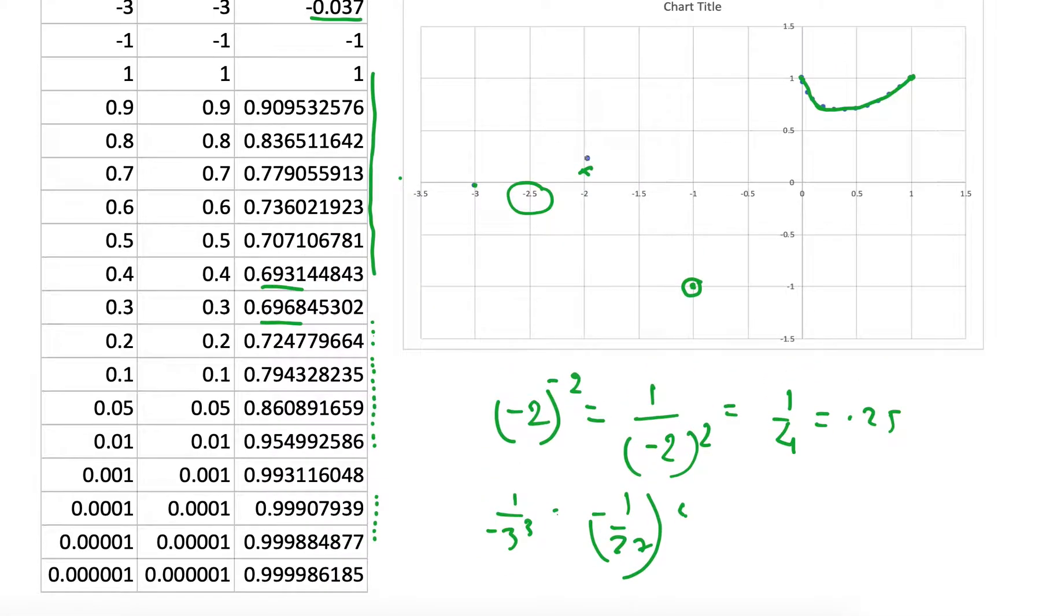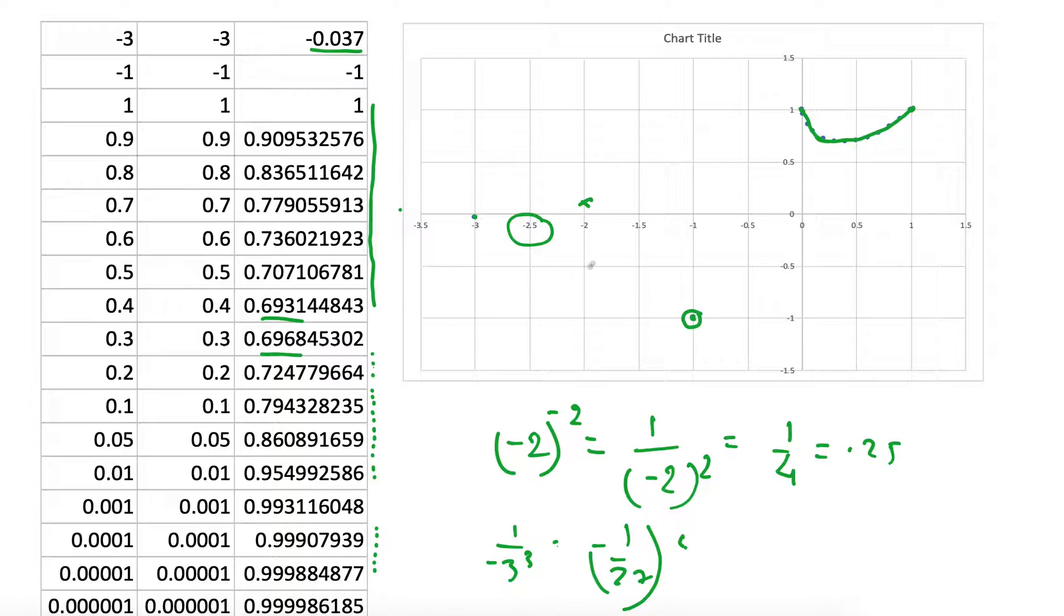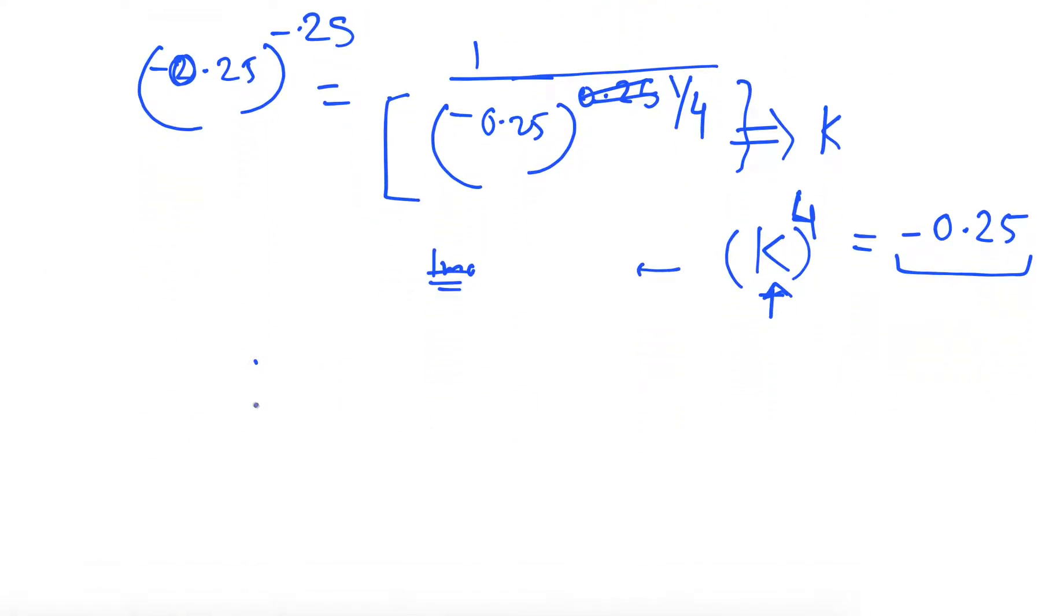So basically, it's not defined and cannot be represented on this real line for minus 0.25 and so on. For any power, we see that if it had been minus 1 over 3 raised to the power minus 1 over 3, then we can find it because it will be 1 over minus 1 over 3, 1 over 3. So we have to find the number k such that if we multiply it 3 times, it becomes minus 1 by 3. So k will be some negative number. So for all these odd powers, we can find the value. But for all the even powers, we cannot find the value which is in the denominator.